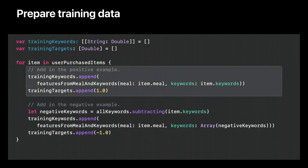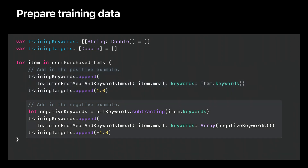For each dish the user ordered, I add an entry with the features generated previously and a positive target value. However, if I just included this, the model wouldn't learn to discern which dishes I like and which I don't. So I also add an entry using all the keywords not present in the dish, with a negative target value of -1. This allows the model to learn which keywords best fit user preferences.